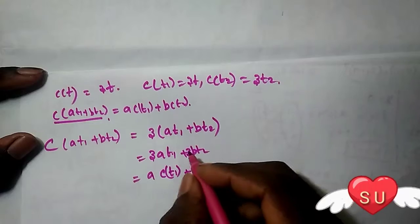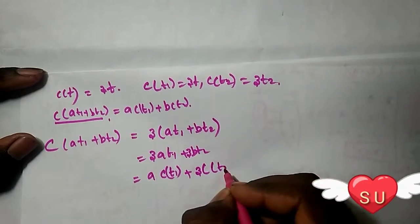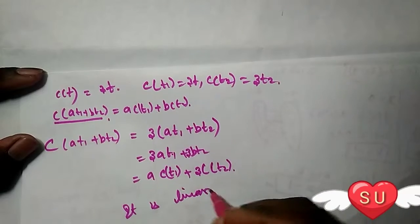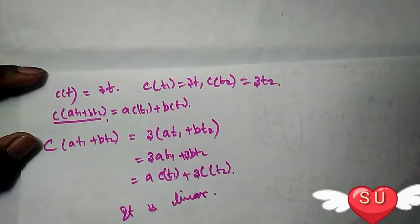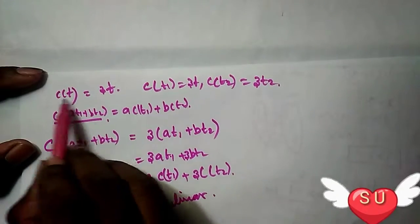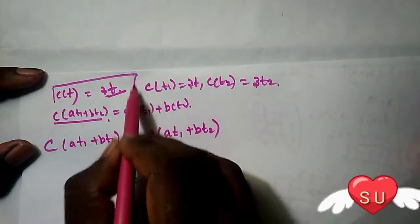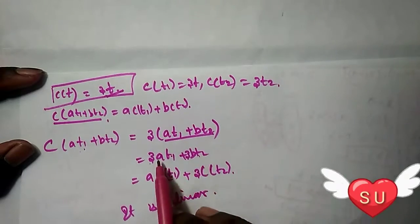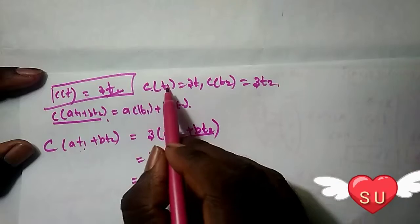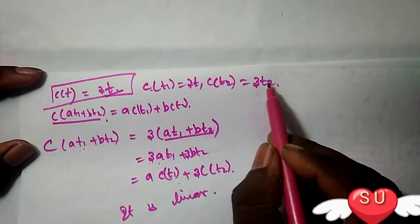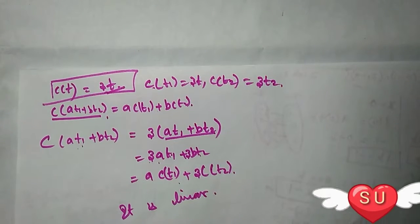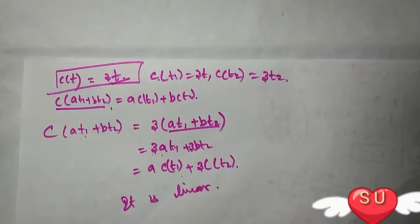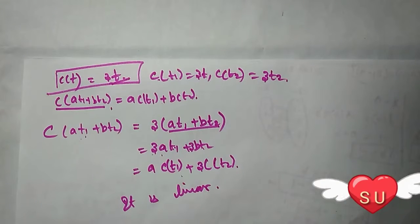Now we can write this as three times A T1 plus three times B T2, which equals three A T1 plus three B T2.